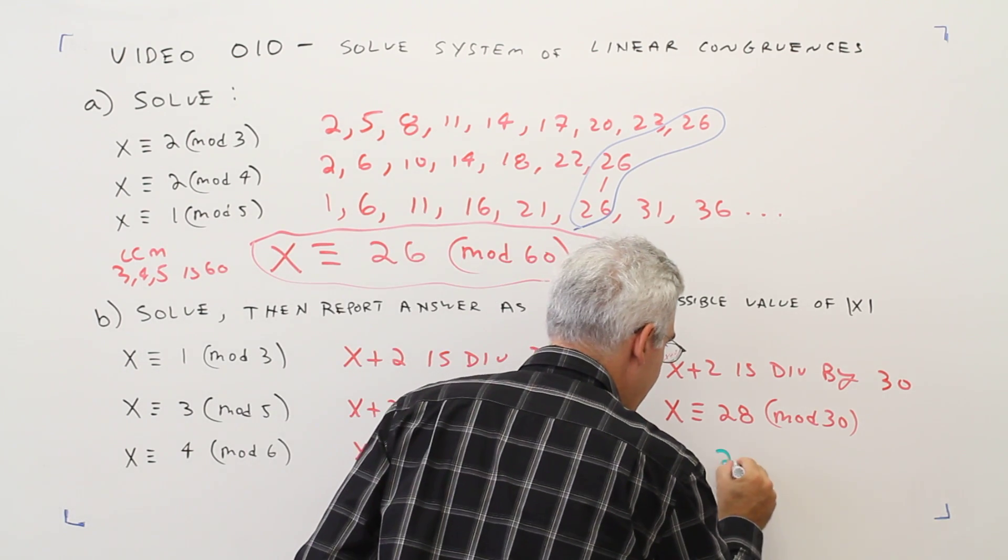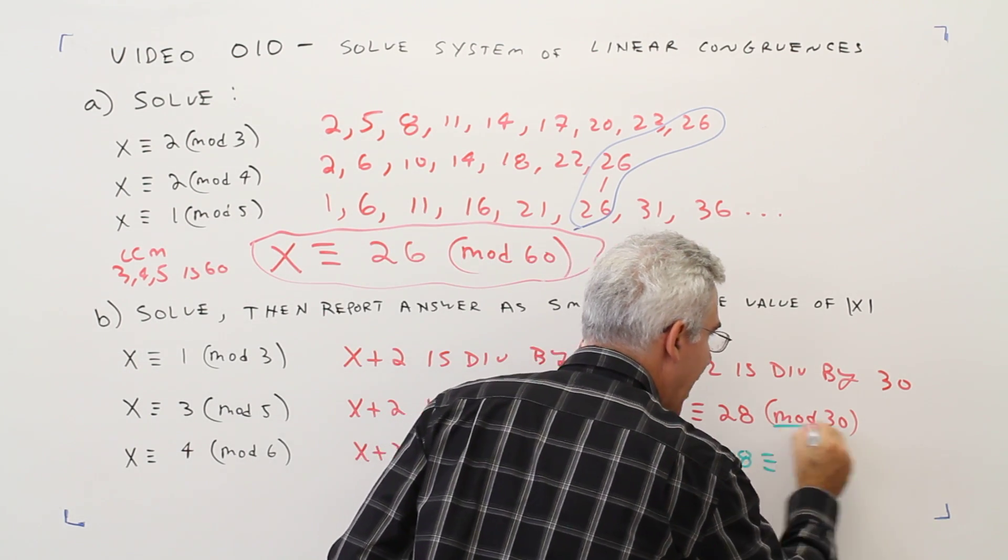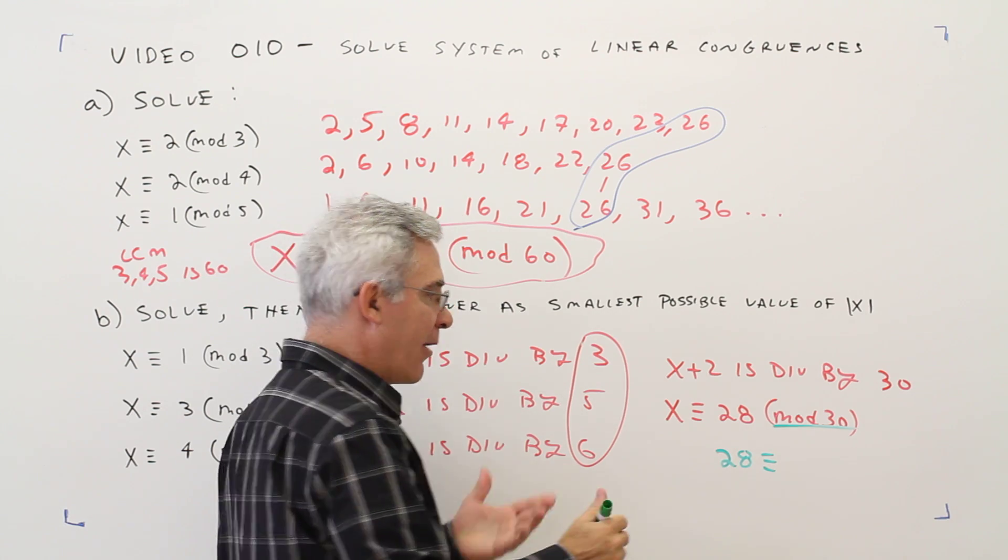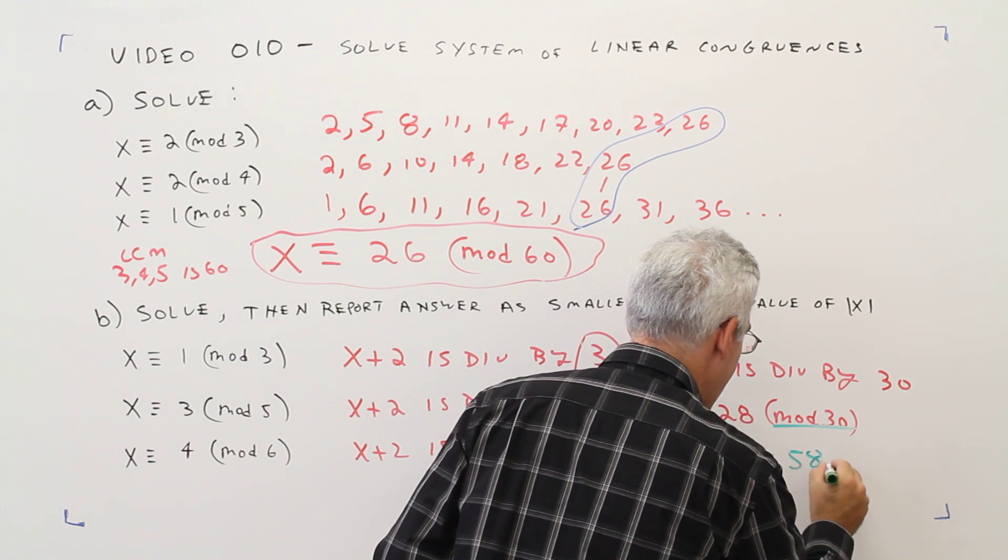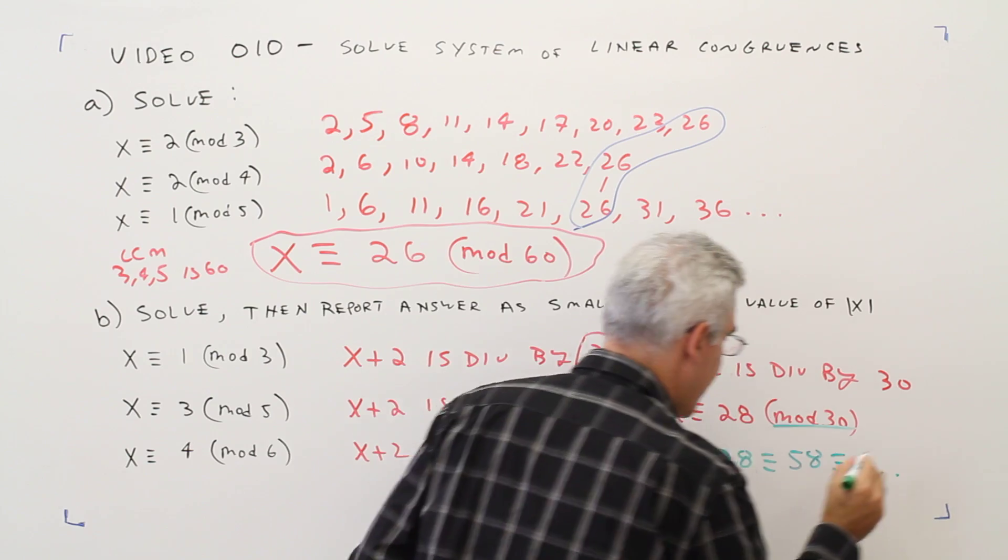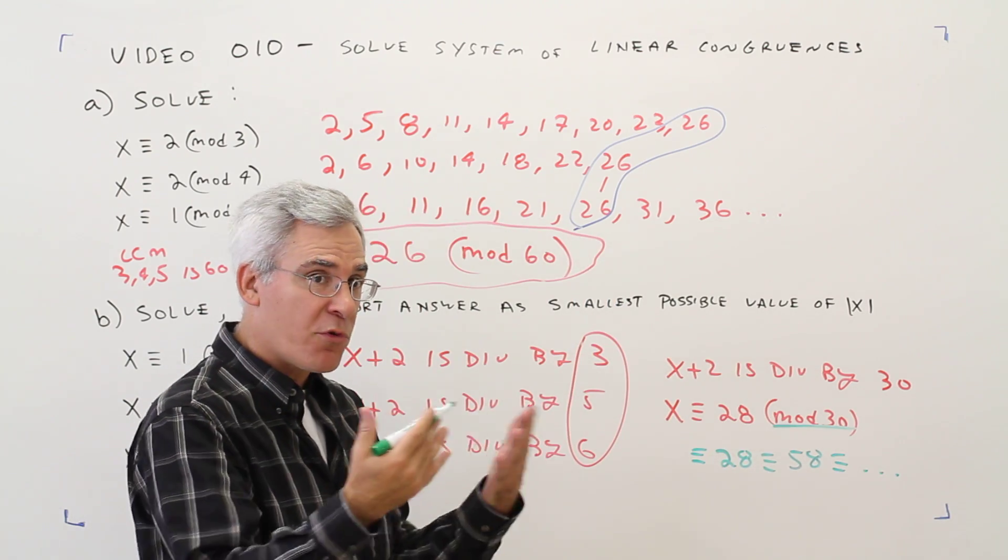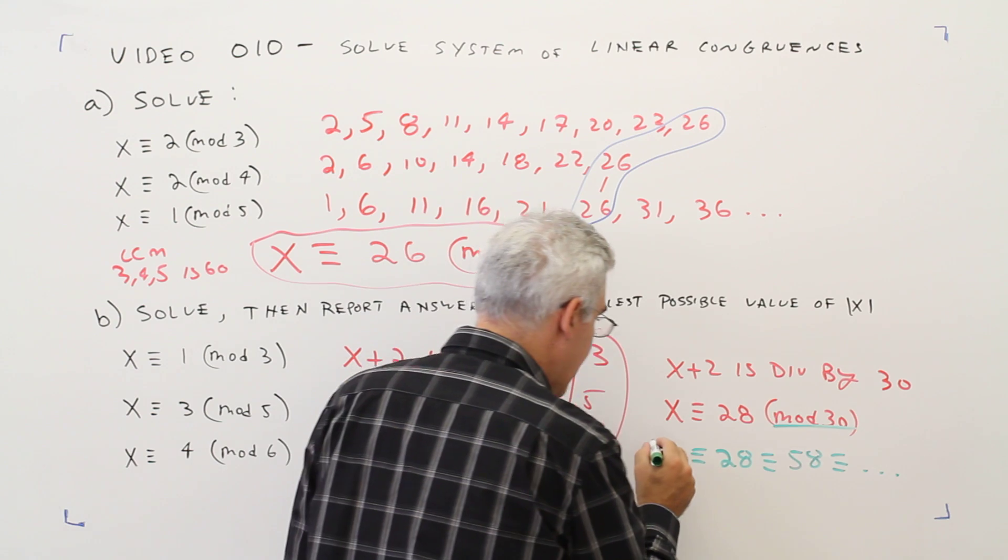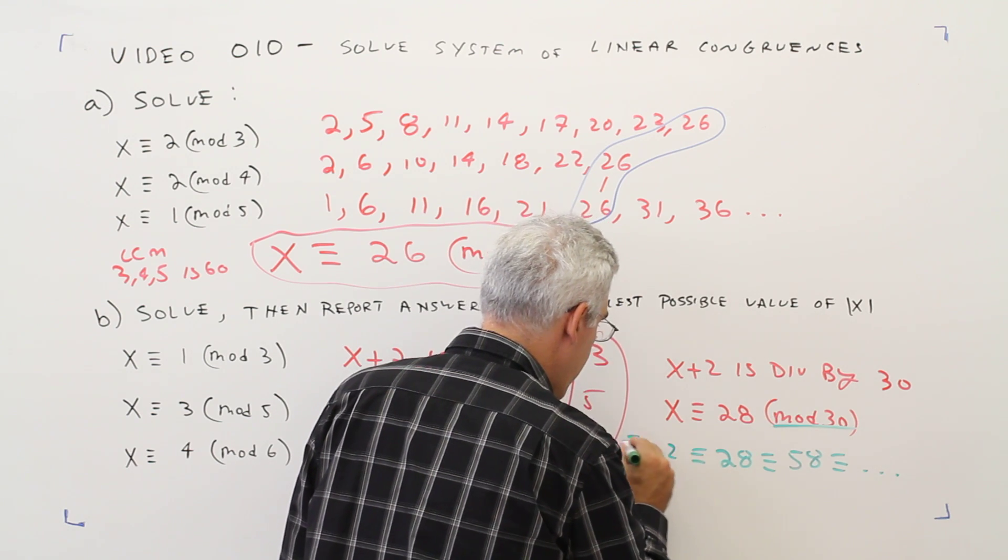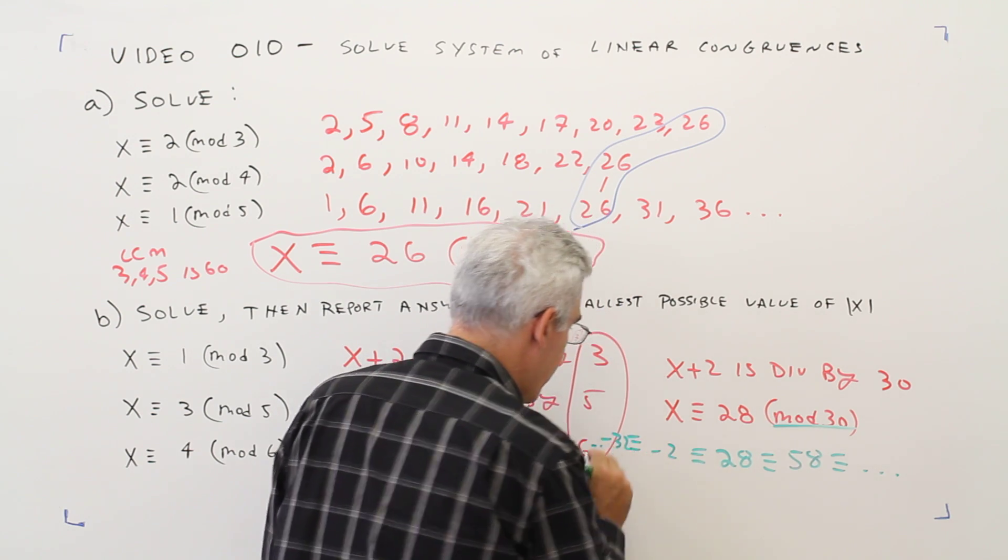So I've got 28. So I'm in mod 30. I can just keep adding 30s: 58, etc. Notice I could also subtract 30s and get negative 2, negative 32, etc.